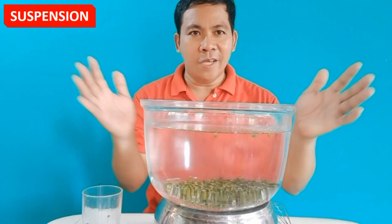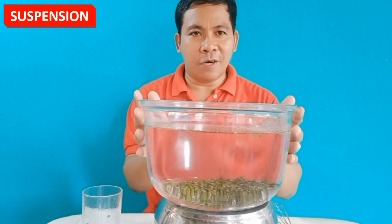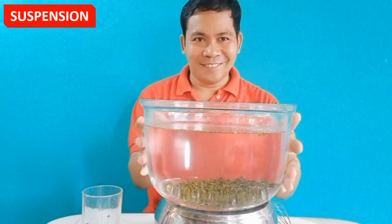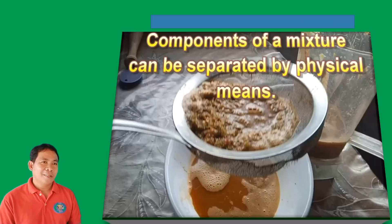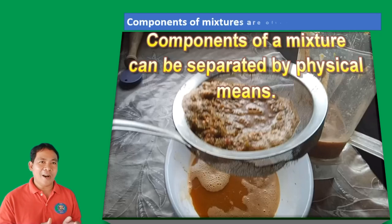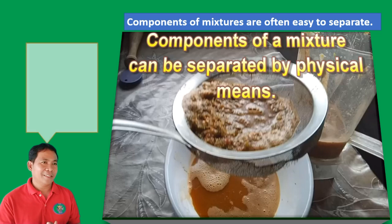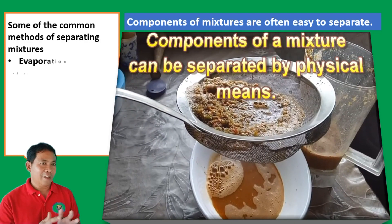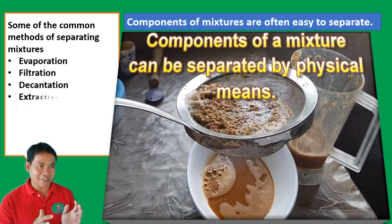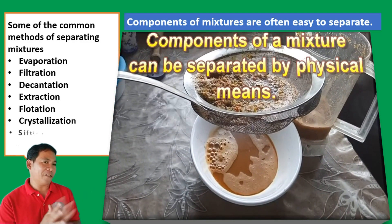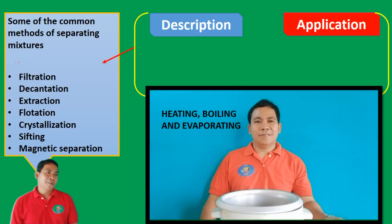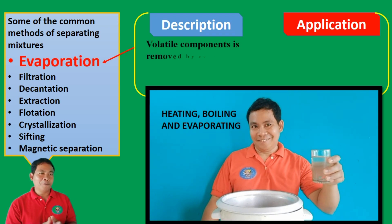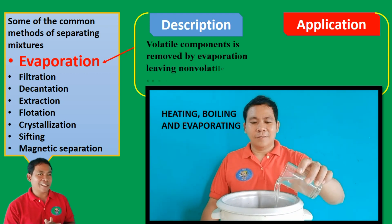Suspension is a heterogeneous mixture where particles are big enough to settle at the bottom of the container. Methods of separating mixtures include: evaporation, filtration, decantation, extraction, crystallization, sifting, and magnetic separation. In evaporation, volatile components are removed by evaporation, leaving non-volatile components behind.